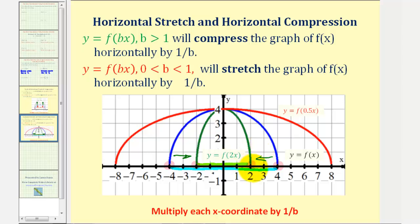When x is two on f of two x, we would have f of two times two, or f of four, which gives us the function value of zero. And when x is negative two, the input would be two times negative two, giving us an input of negative four. To find points on f of bx from the corresponding points on the parent function f of x, we actually multiply each x coordinate of f of x by one over b, not b. So with b equal to two, we'd multiply each x coordinate on the parent function by one half. Because of this, when b is greater than one, f of bx will compress the graph of f of x horizontally by one over b. So the green graph is horizontally compressed by one half.